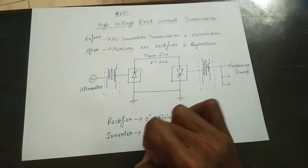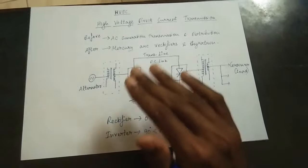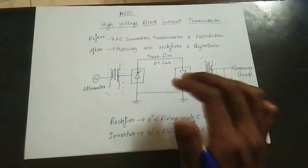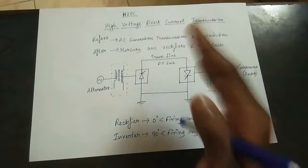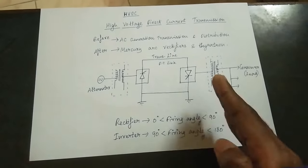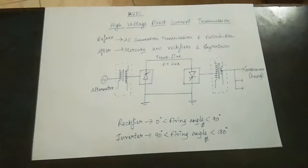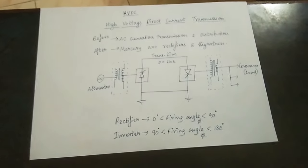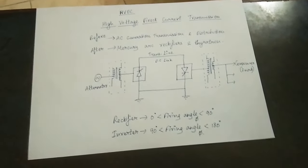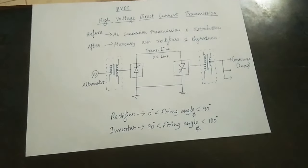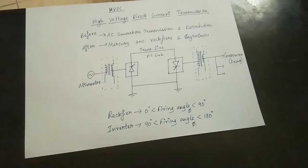The rectifier converts AC to DC. We use the rectifier to transmit DC. In the inverter, DC is converted back to AC and transferred through a transformer to the consumer side.